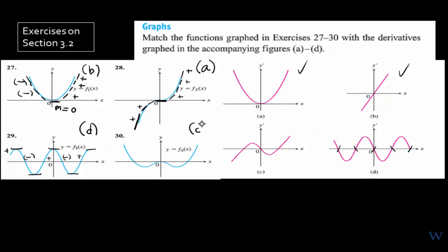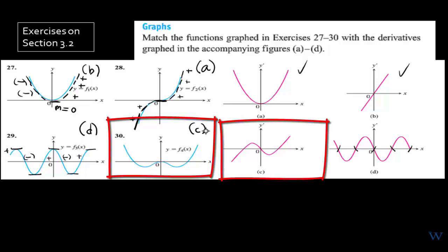Number 30 by elimination matches graph C. Let's verify: counting zero slopes on the curve, there are one, two, and three zero slopes. So the derivative function should have three x-intercepts or three zeros. Does letter C have three zeros? Yes — one, two, and three — occurring where there's a zero slope. Indeed, it matches.